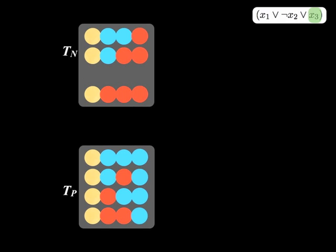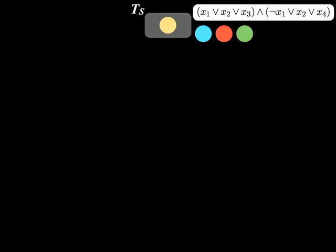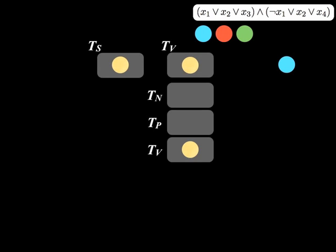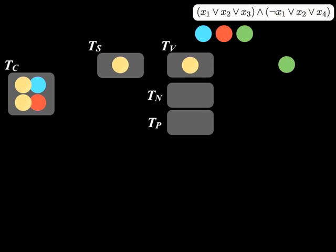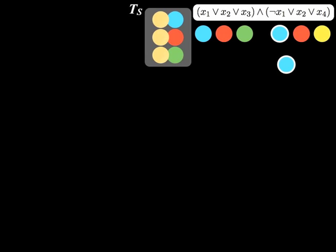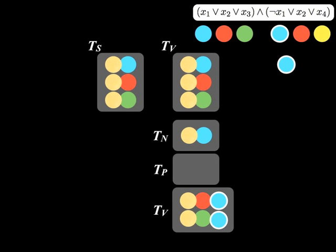We observe the literal assignments. The distribution algorithm removes conflicting witness candidates by filtering the contents into T sub N. To avoid redundant literal assignments, we filter matching literals into T sub P. We then assign a literal to all remaining tube contents.